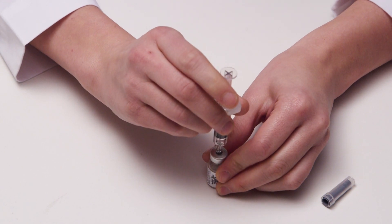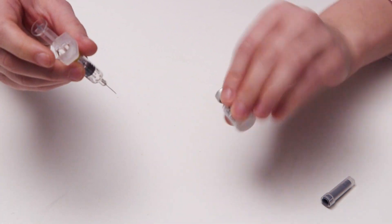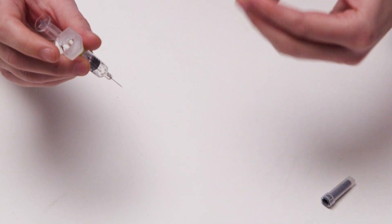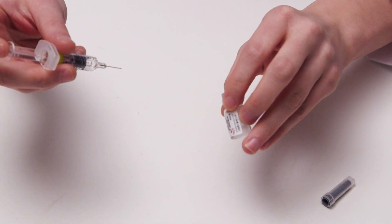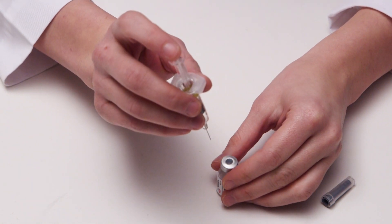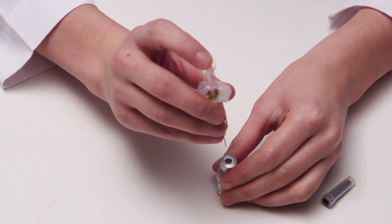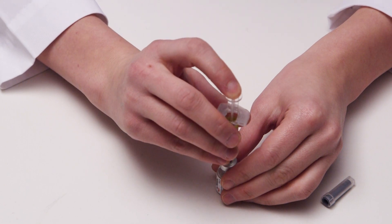Remove the syringe and gently mix the powder into the liquid. Once it's thoroughly mixed together, insert the syringe again and turn both the syringe and vial upside down so that the vial is on top.